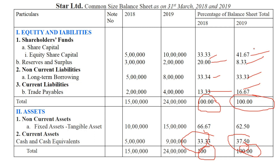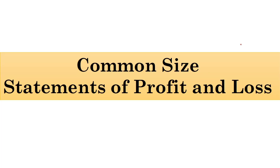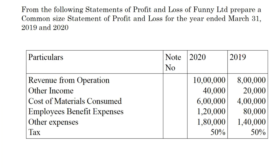Now let's start the common size statement for P&L. This is the question of Funny Limited — that is just the company's name. Here, the base for every item will be the revenue from operations. Whatever element you compare, the base will always be revenue from operations. Even for other income, the base will be revenue from operations, not the other income figure itself.